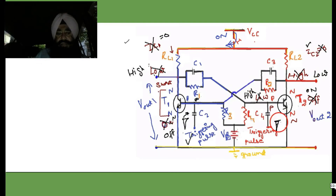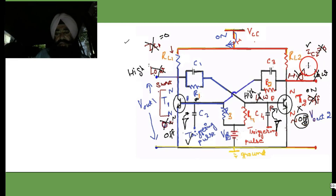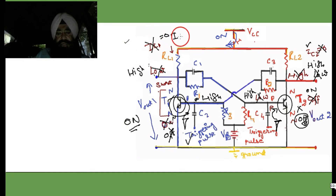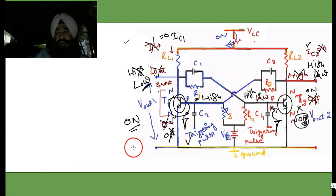VOUT2 is LOW and VOUT1 is HIGH. Now let a negative triggering pulse be applied to the base of T2 — it makes T2 OFF. When T2 goes OFF, the potential raises HIGH, and the base of T1 becomes high, so T1 turns ON. Collector current IC1 starts flowing and the potential at VOUT1 becomes LOW. The new states are again: T1 in LOW state and T2 in HIGH state.